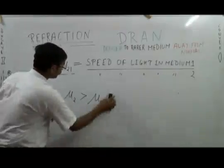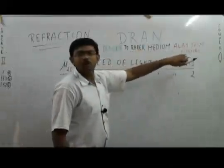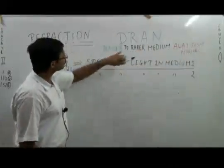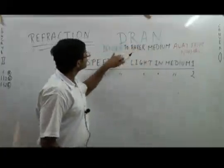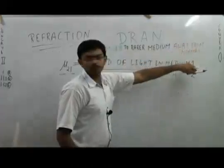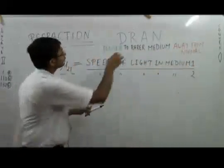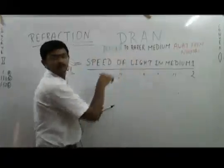For keeping in mind whether light will be reflected away from or towards the normal, we have to consider DRAN - denser to rarer away from normal. That is, if light travels from denser to rarer medium, the light ray will be reflected away from the normal.